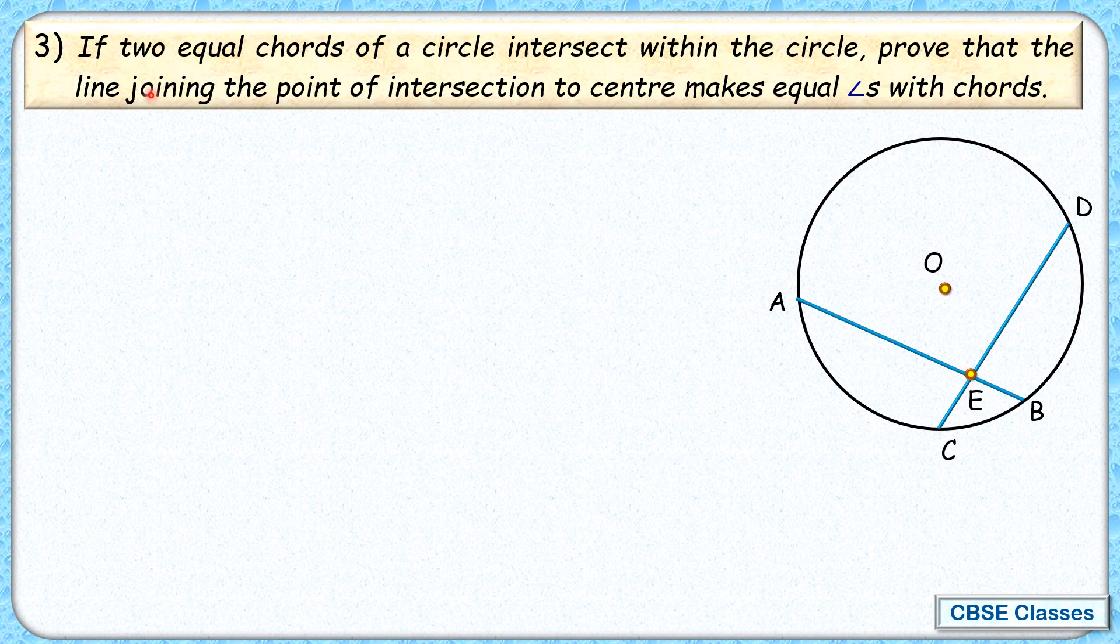We have to prove that line joining the point of intersection to the center, this is point of intersection and a line is joining this to center, makes equal angles with chords. That means this angle here and this angle. We have to prove that these two angles are equal.